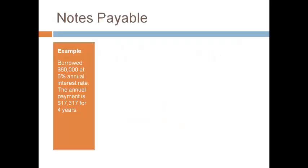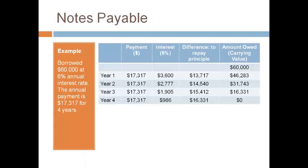Let's look at an example. The company borrowed $60,000 at a 6% annual interest rate. The annual payment that pays the principal of $60,000 and the interest is $17,317 for four years. An amortization table has four columns: the payment, the interest, the difference between the two that repays the principal borrowed, and the amount owed at the end of the year.